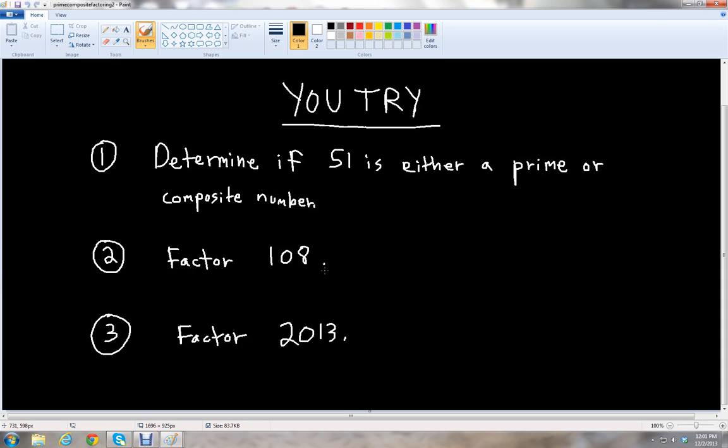The second problem asks, factor 108 as a product of prime factors. Notice that it's an even number, so you know what it's divisible by. And then number 3, problem 3, factor our year, 2013. Just start with your prime numbers, your 2, your 3, etc. See if it can go into 2013, and then you can factor from there.